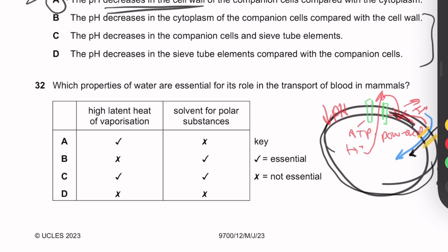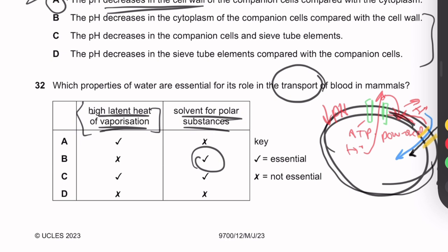Question 32: Which properties of water are essential for its role in transport of blood in mammals? High latent heat of vaporisation — this is important for cooling (sweating/panting) but not specifically for blood transport. Being a solvent for polar substances — yes, this is directly relevant to blood transport as it allows ions, glucose, and other polar molecules to dissolve and be transported. Answer: solvent for polar substances.